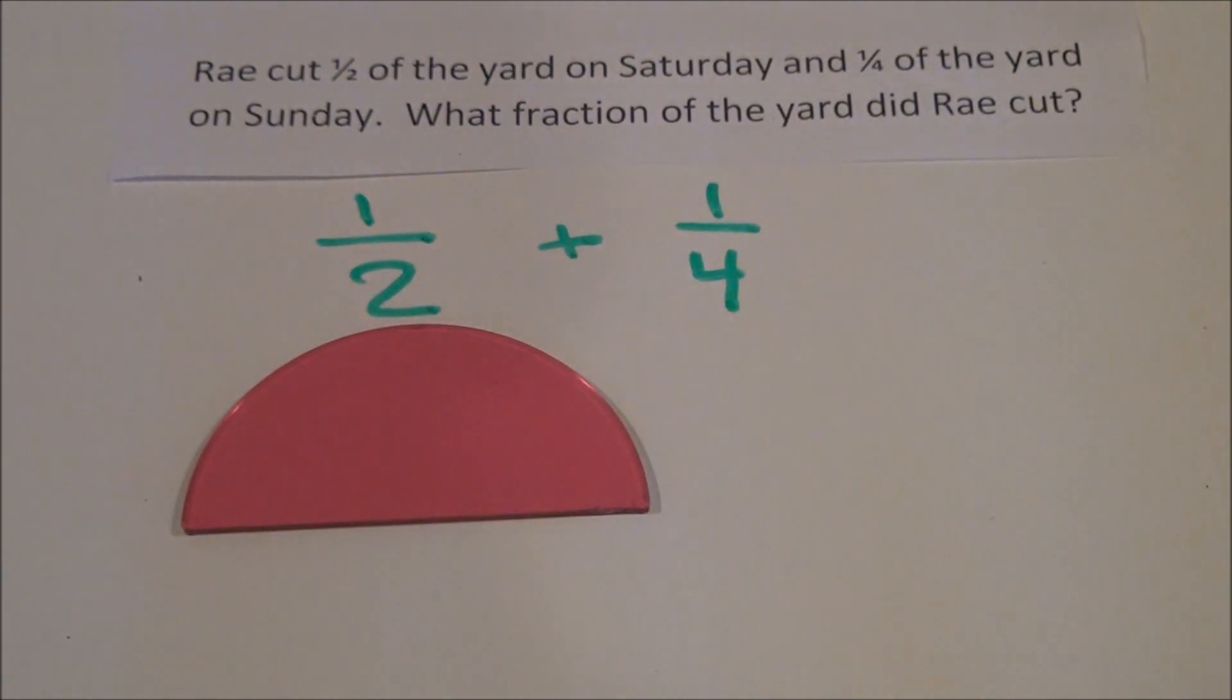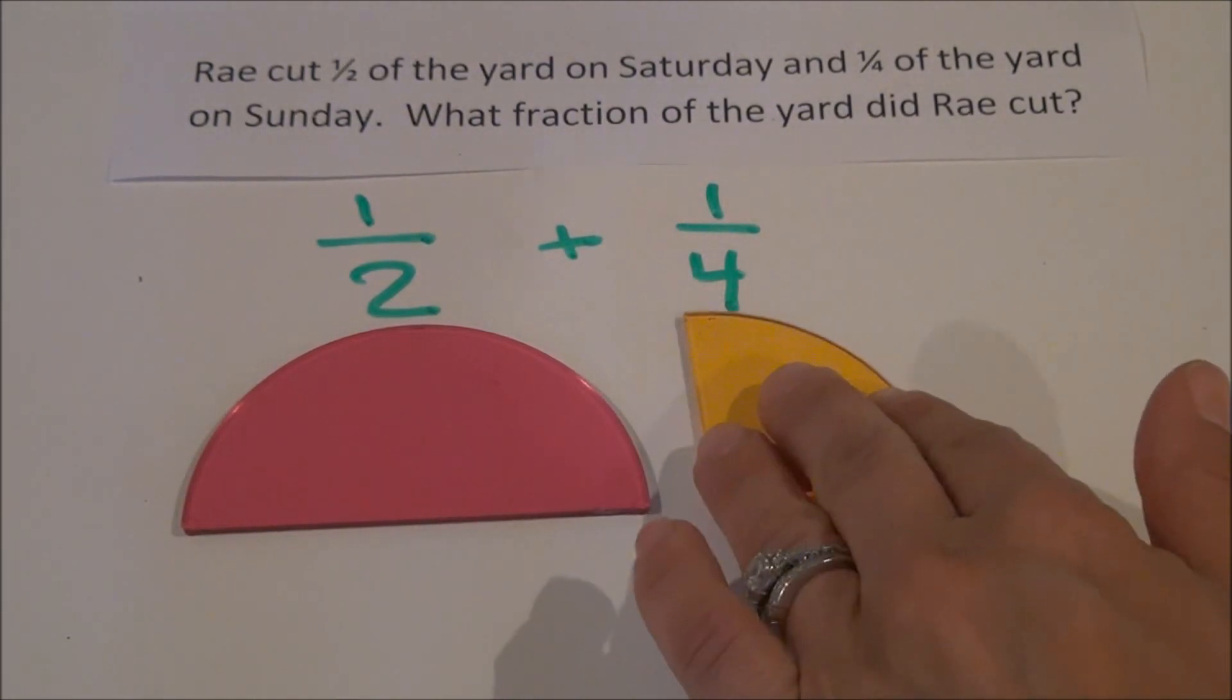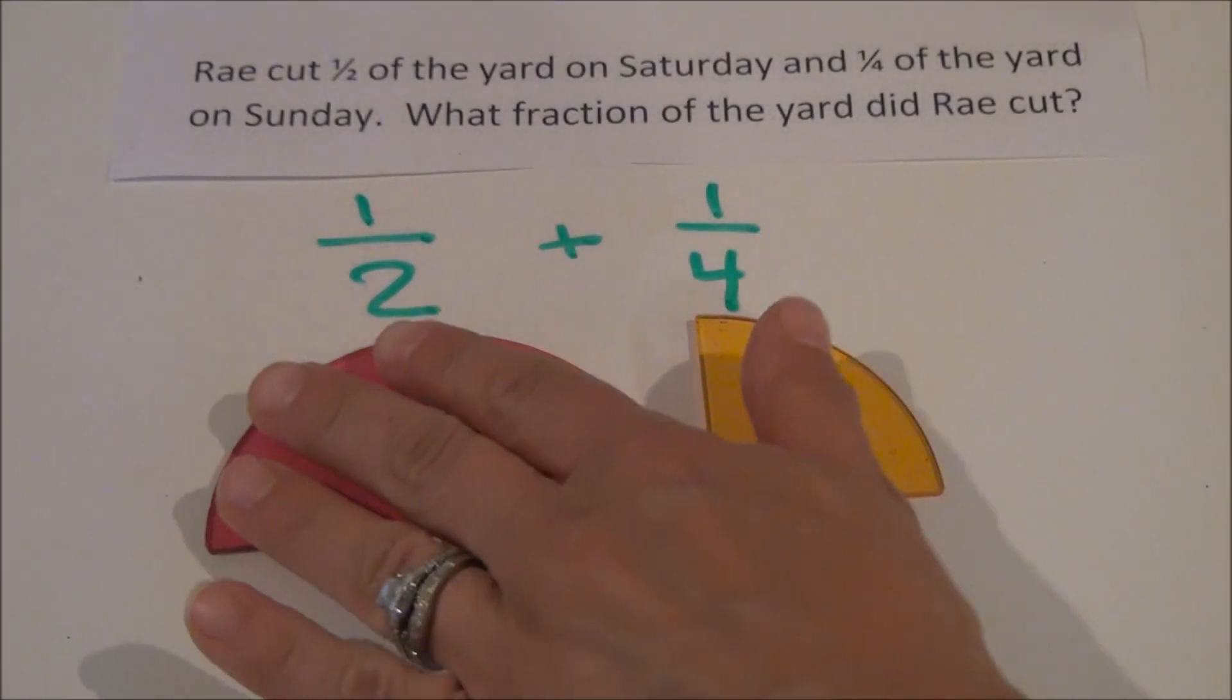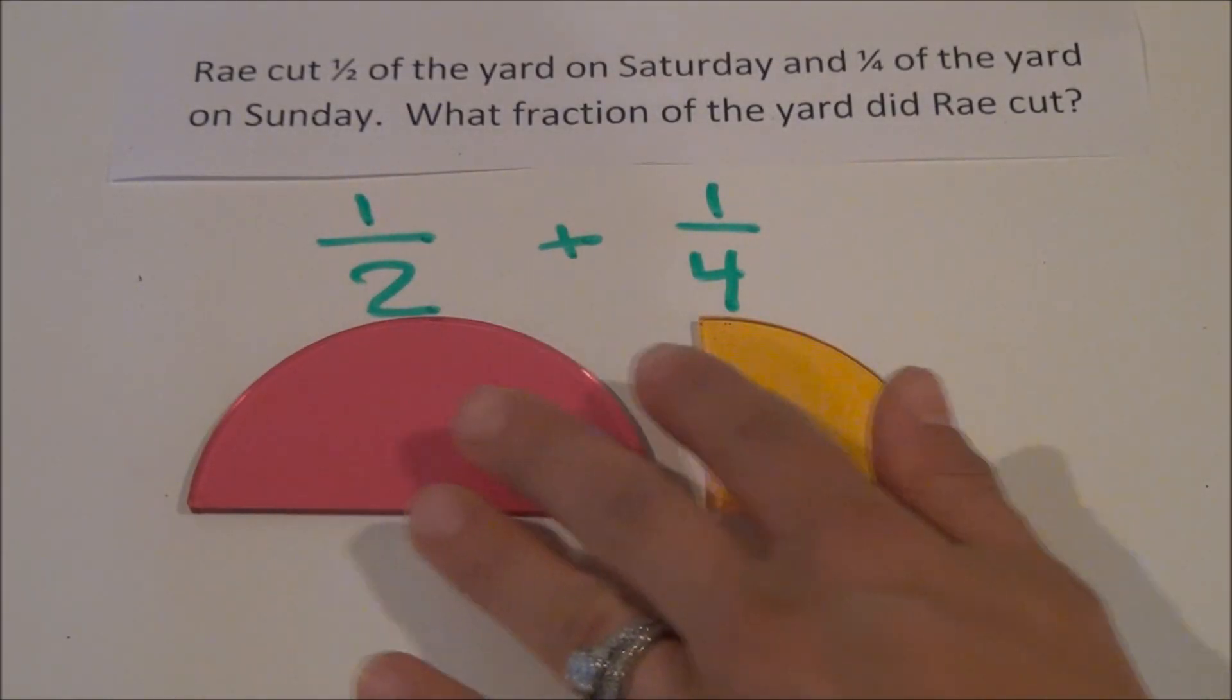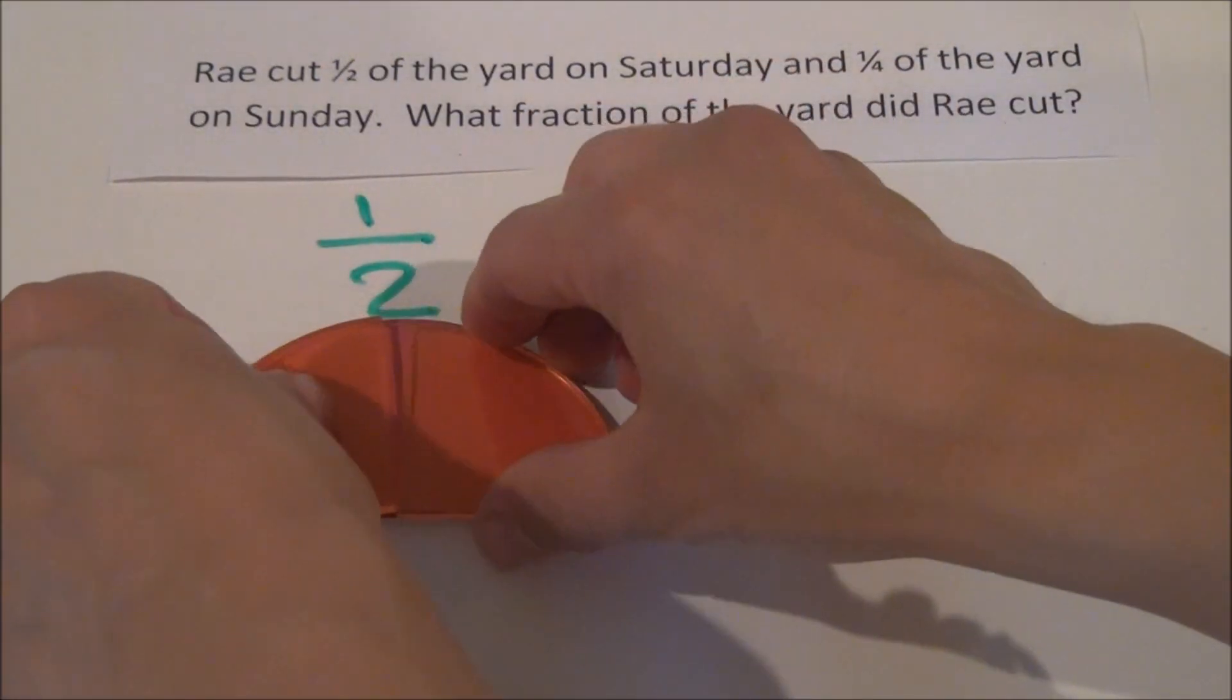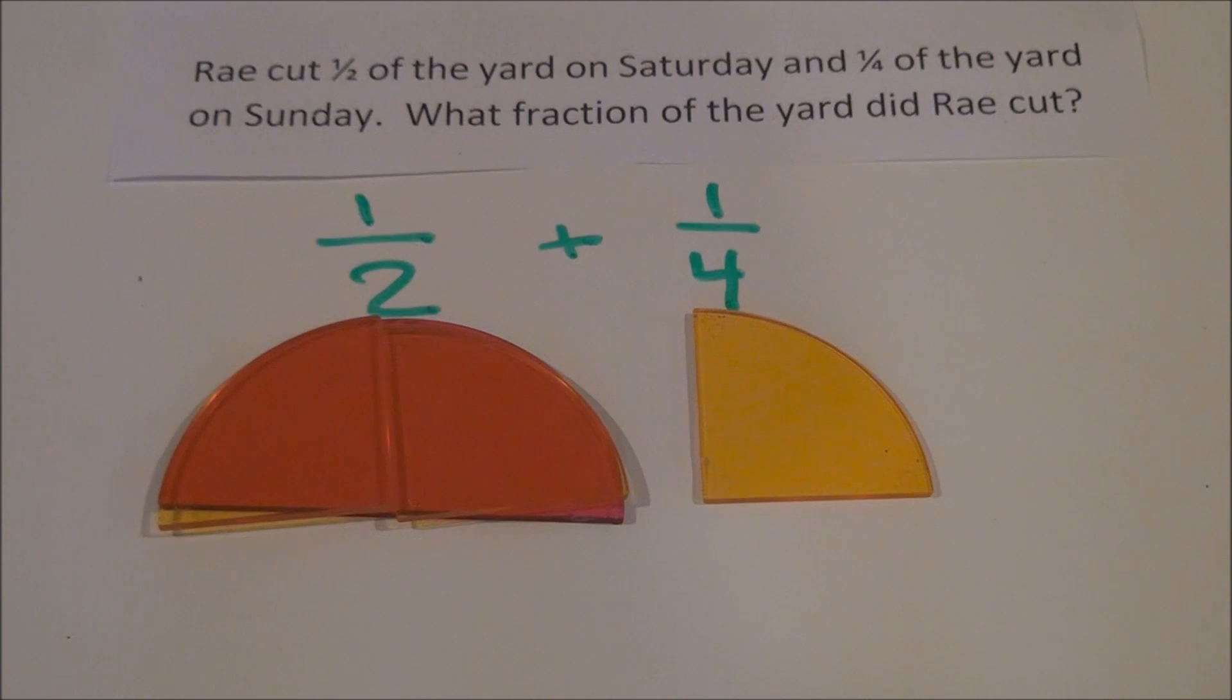We can easily find an equivalent fraction by representing the problem with circle models. One-half, one-fourth. Let's look at these fractions and decide which one we will change. As I look at my circle models, I can see that I can replace that larger fraction, one-half, with two one-fourths. It's the same amount. It just looks different.